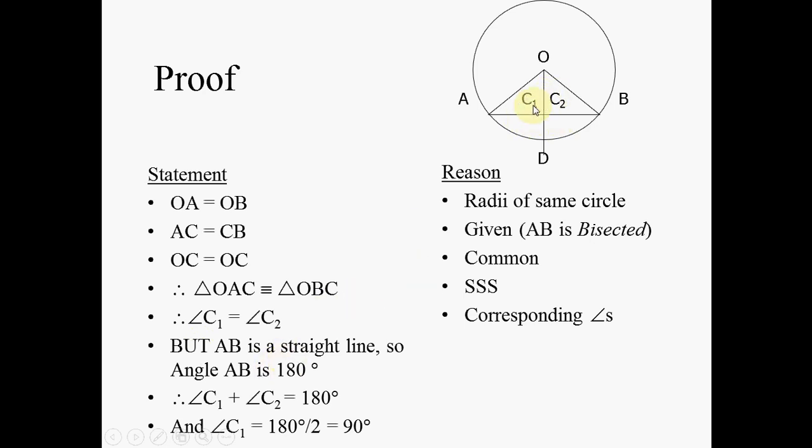Therefore angle C1 plus angle C2 must be equal to 180 degrees. But because the two angles are the same size, the one angle will be 180 divided by 2 which is 90 degrees, which is what you asked us to prove.